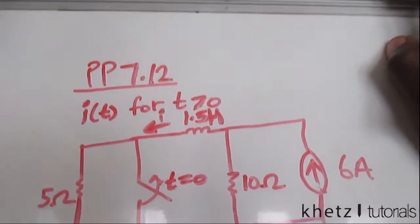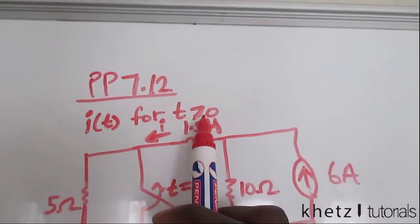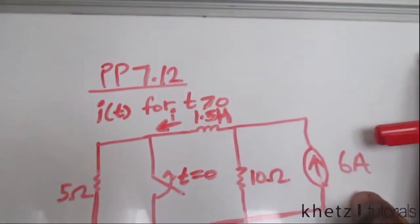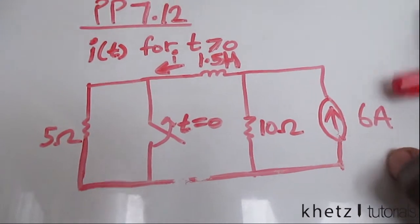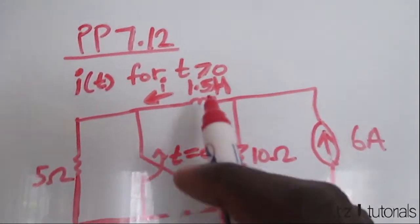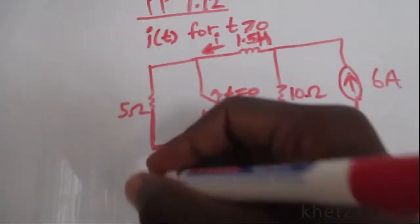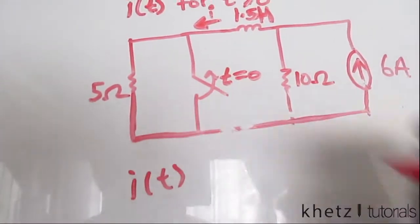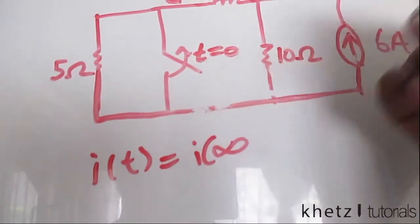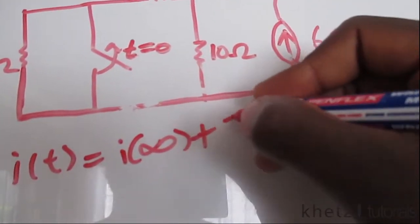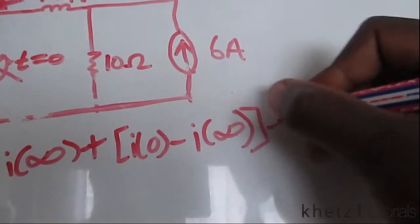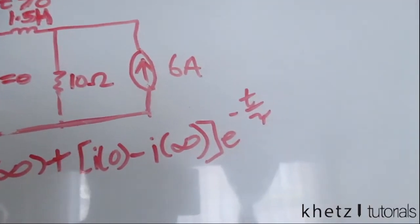We're asked to find i(t) for time greater than zero. This is a similar problem with the previous section which talked about step response of an RC circuit, but now we have an RL circuit. We have an inductor in play and we're dealing with current, so the general formula would be i(∞) plus [i(0) - i(∞)]e^(-t/τ), and not forgetting the units are amperes.